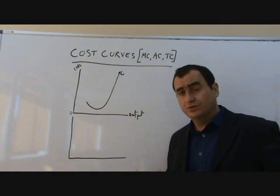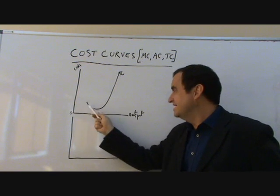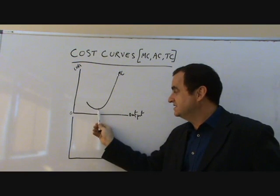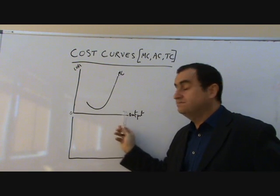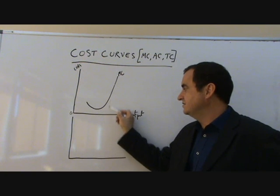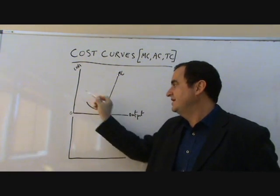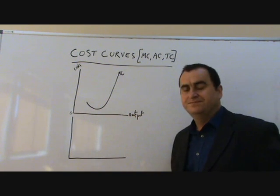You should read up on the law of diminishing marginal returns to understand that. But regardless of that, you can learn merely that the MC curve is always this shape. It turns, and after this point, any extra unit will cost more extra than the unit before it. For instance, if this is the ninth unit, the ninth unit costs an extra that much, and that's more than the eighth unit. The eighth unit only costs that much. And so on.